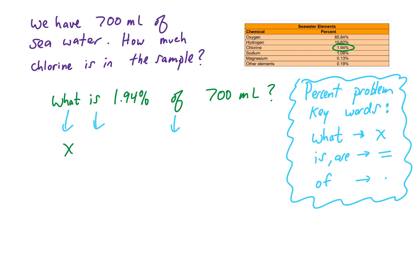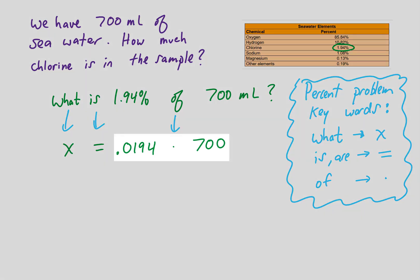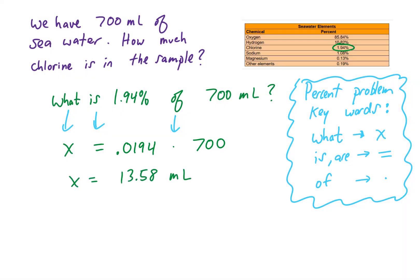Using that table to convert the question into an equation: x equals 1.94%, which we convert to a decimal by moving the decimal two units to the left, giving 0.0194. 'Of' is multiplication, and 700 milliliters stays as is. So we just need to multiply 0.0194 times 700, and I'm getting 13.58. So out of 700 milliliters, there are 13.58 milliliters of chlorine.